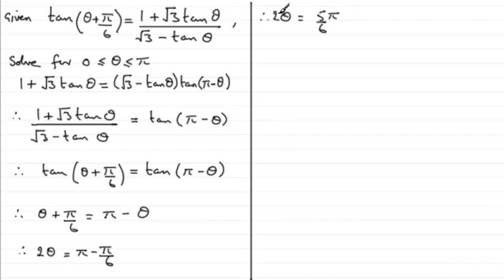And if I now divide both sides by 2, I end up with it following that theta equals 5 pi over 12.